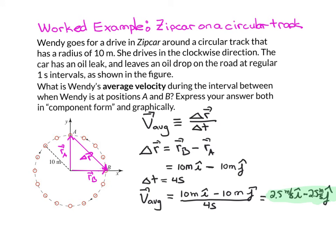And so what we get is 2.5 meters per second i-hat minus 2.5 meters per second j-hat. And if we want to know what this vector looks like when we plot it graphically, it's going to point in the same direction as delta R, pointing down and to the left at a 45 degree angle below horizontal.